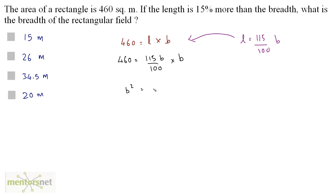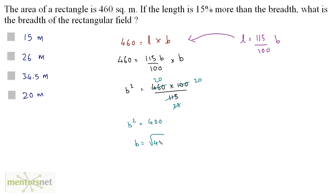So B² equals 460 times 100 divided by 115. Now 5 times 23 is 115 and 5 times 20 is 100; 23 times 20 is 460. So B² equals 20 times 20, which is 400, and B equals the square root of 400. Therefore B equals 20 meters. Option D is the correct answer.